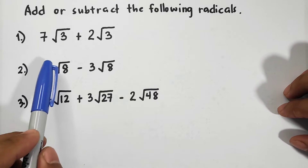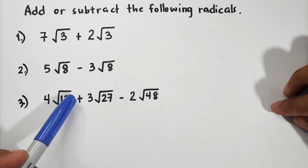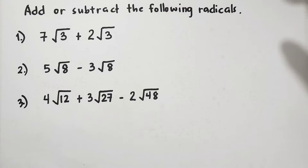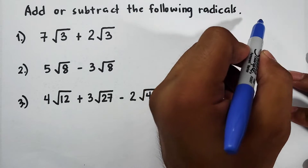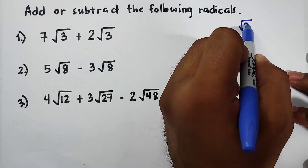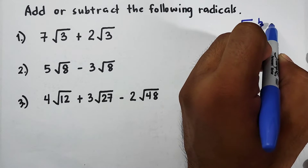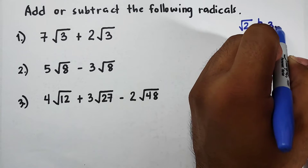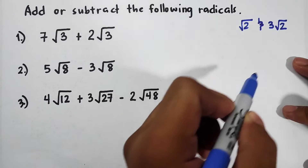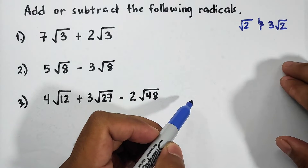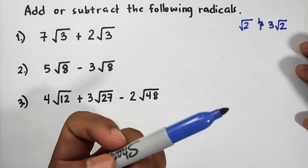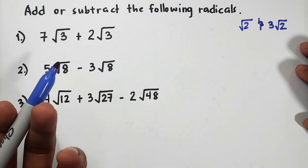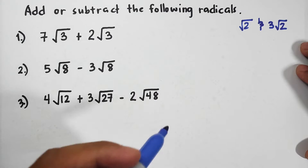Basically, the basic rule in adding and subtracting radicals is that you can only add or subtract radicals with similar radicands. Let me give you an example of similar radicands. If we have square root of 2 and 3 square root of 2, these two radical expressions can be added or subtracted. How do we identify whether the given radicals are similar?